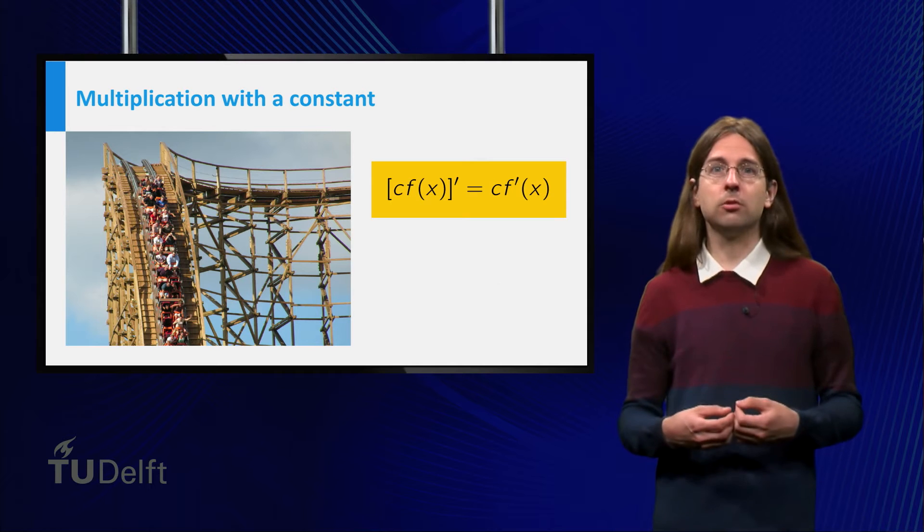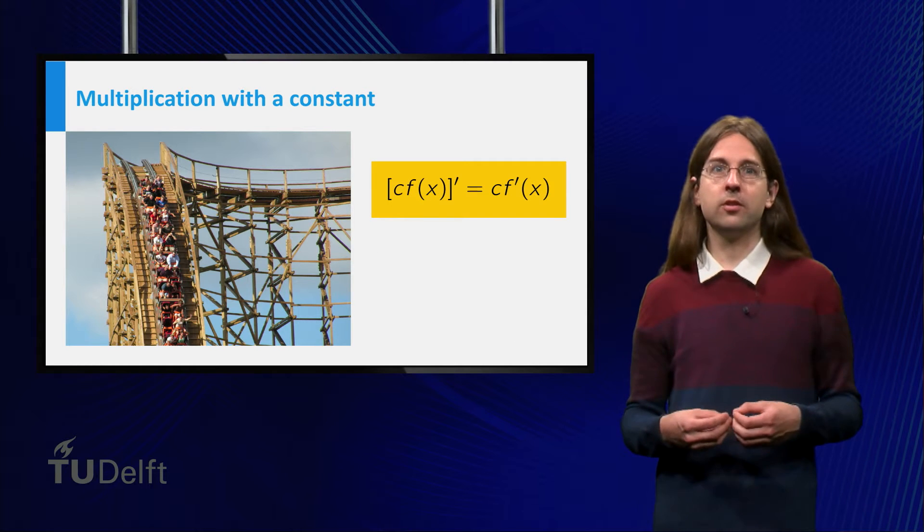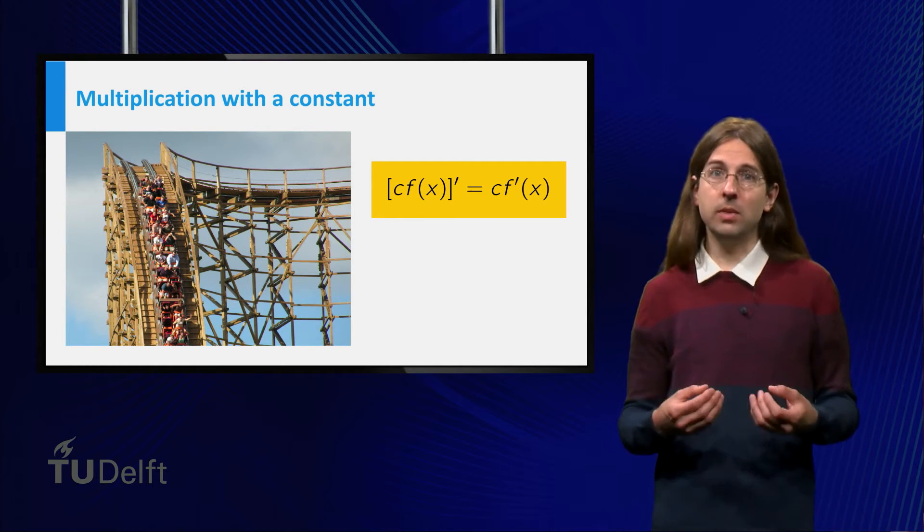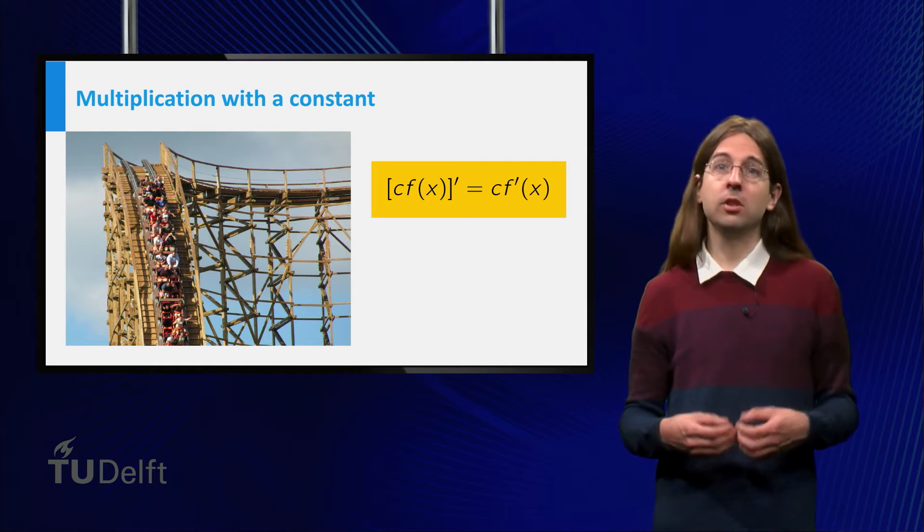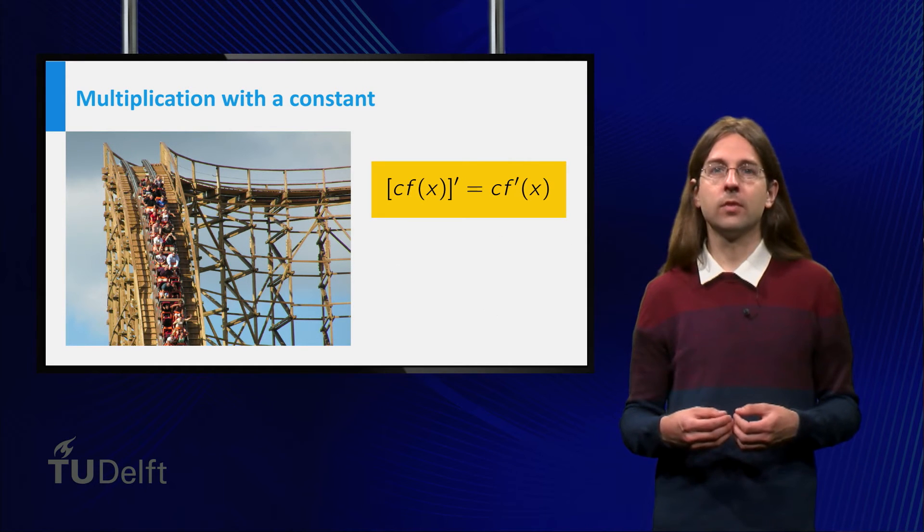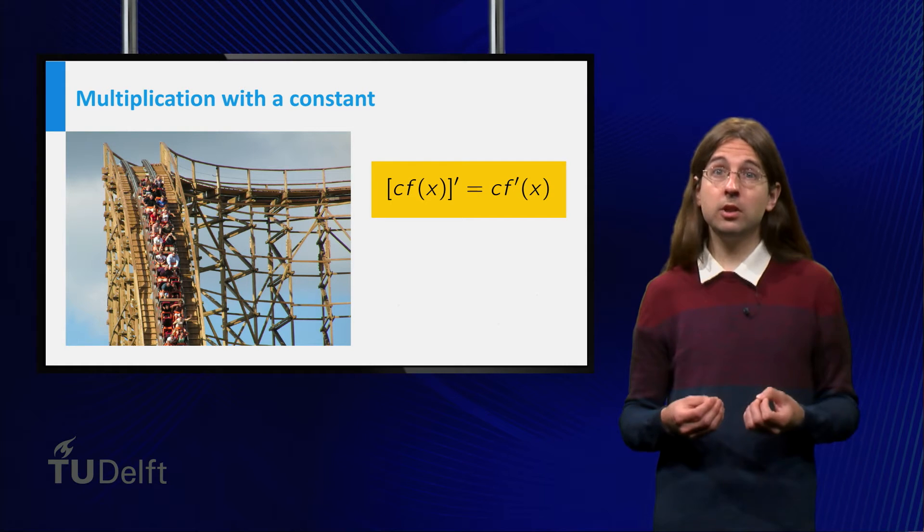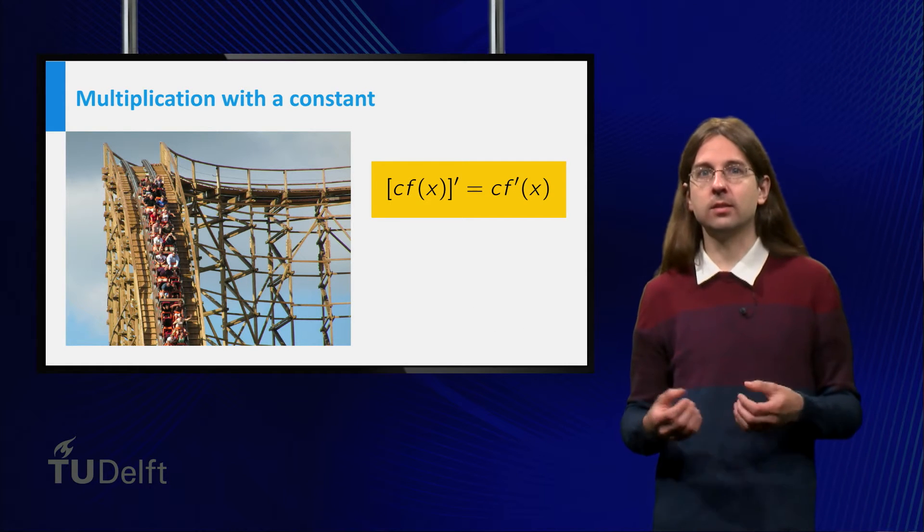Consider a car on a roller coaster and let us measure the distance it has travelled in meters as a function of time measured in seconds. The derivative of this function is the speed in meters per second.